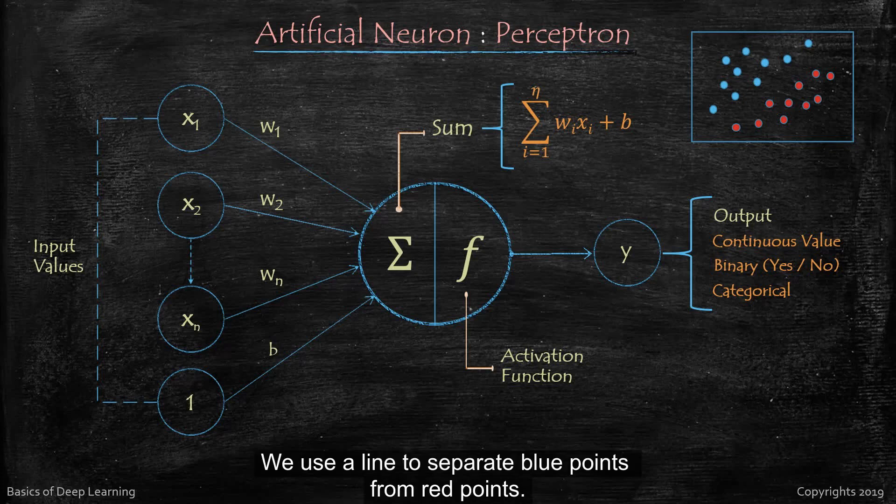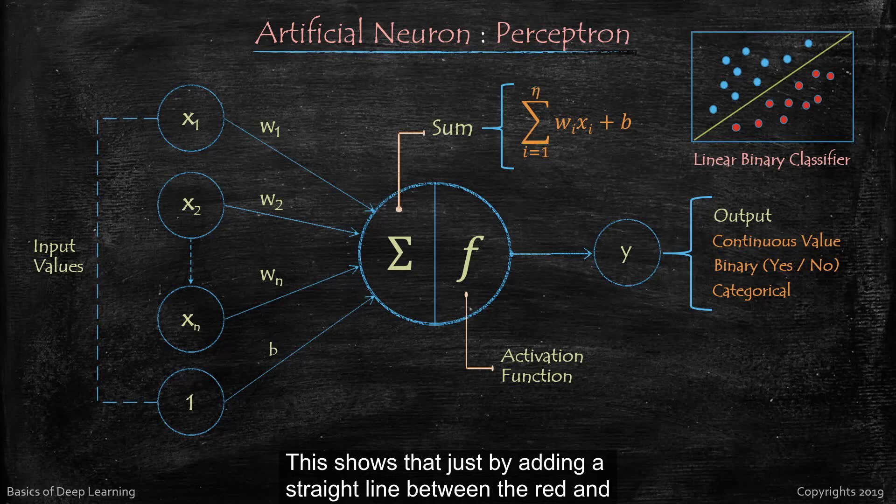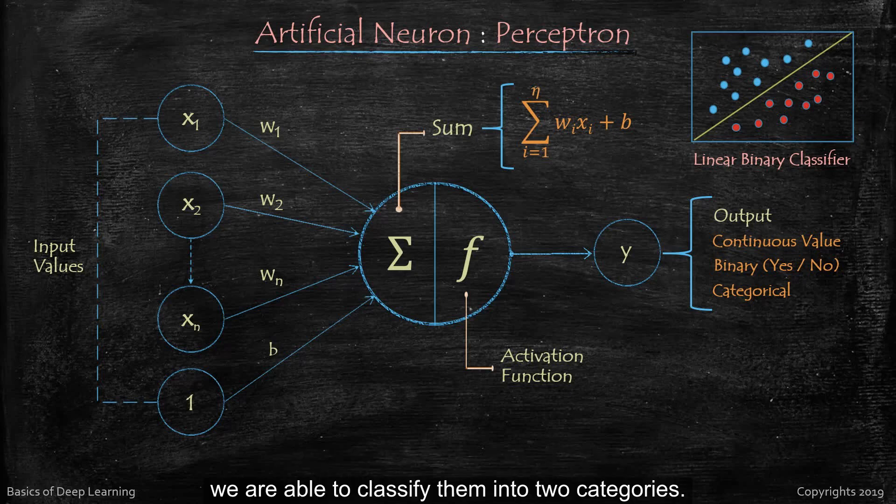We use a line to separate blue points from red points. This shows that just by adding a straight line between the red and blue points we are able to classify them into two categories. This is called as a linear separation.